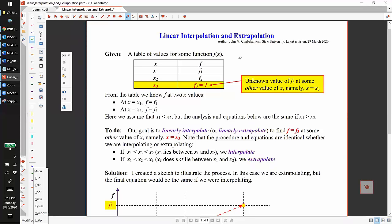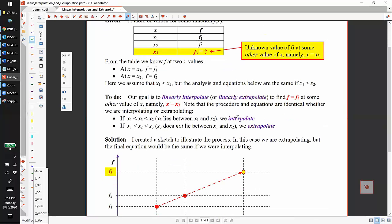Let's look at how you linearly extrapolate or interpolate. Suppose we have some function f as a function of x, and we know x1, x2 and we know f1 and f2 at their corresponding values. At some other x3, we want to find f3. We're going to assume here that x1 is less than x2, but the math is still the same if it's the opposite case.